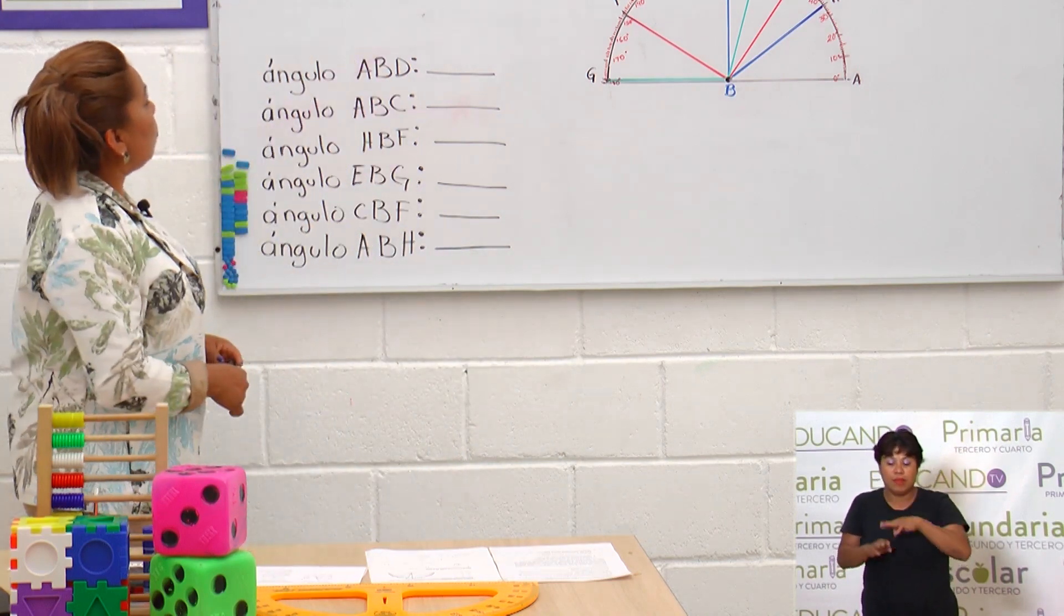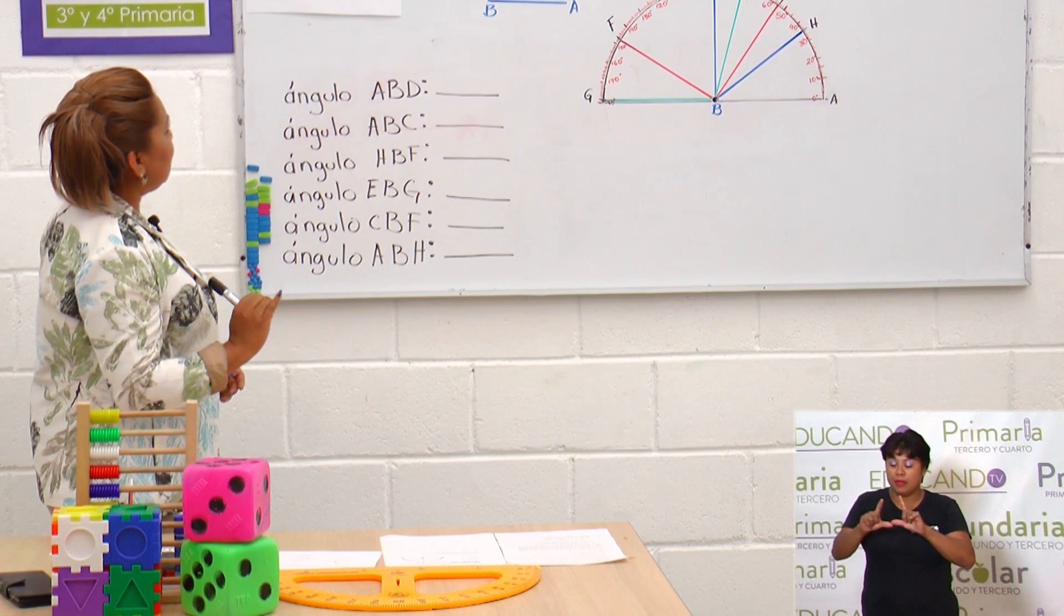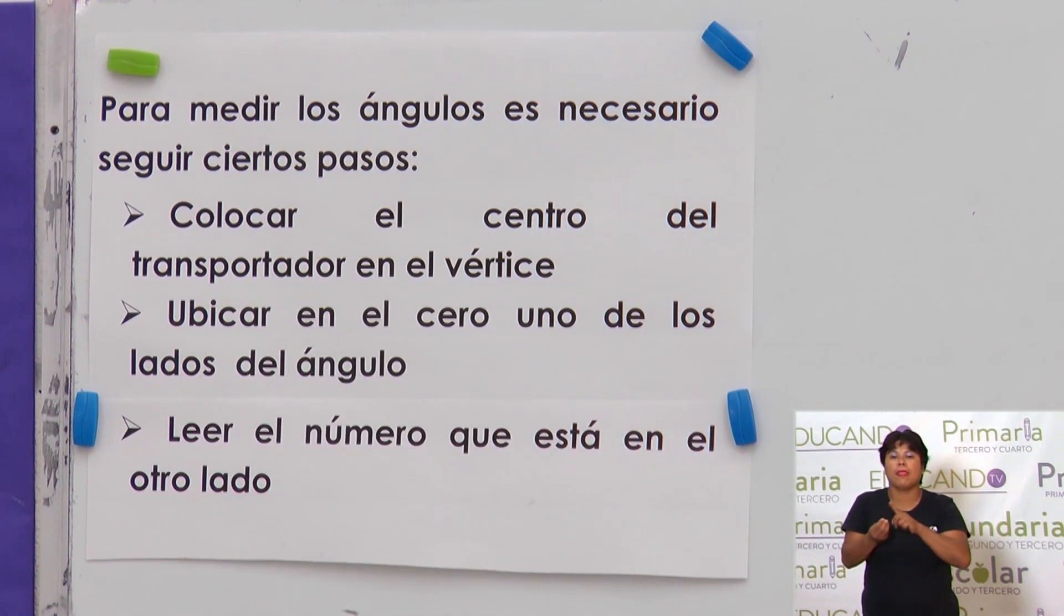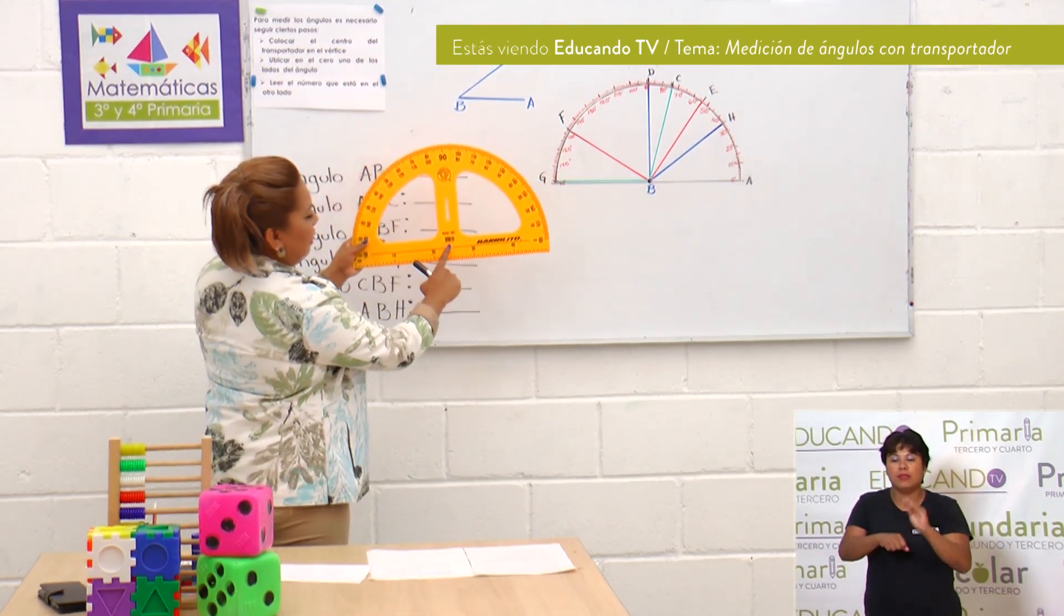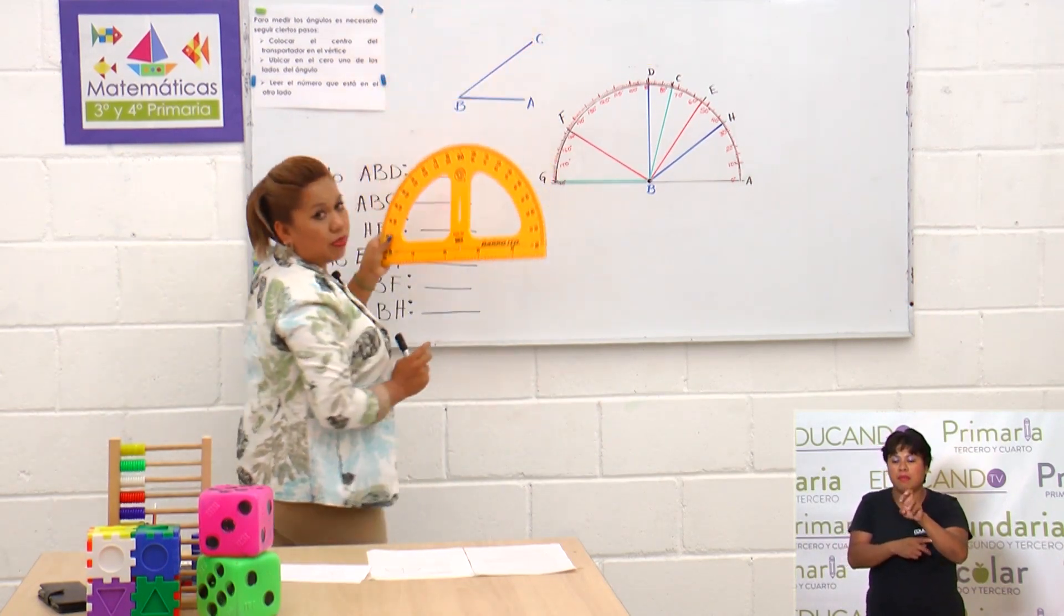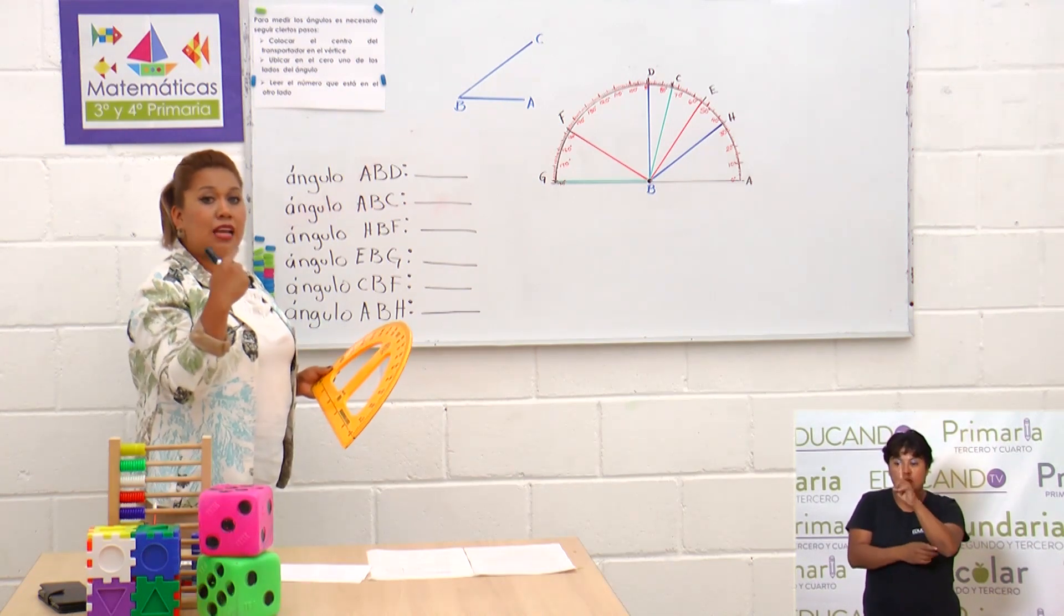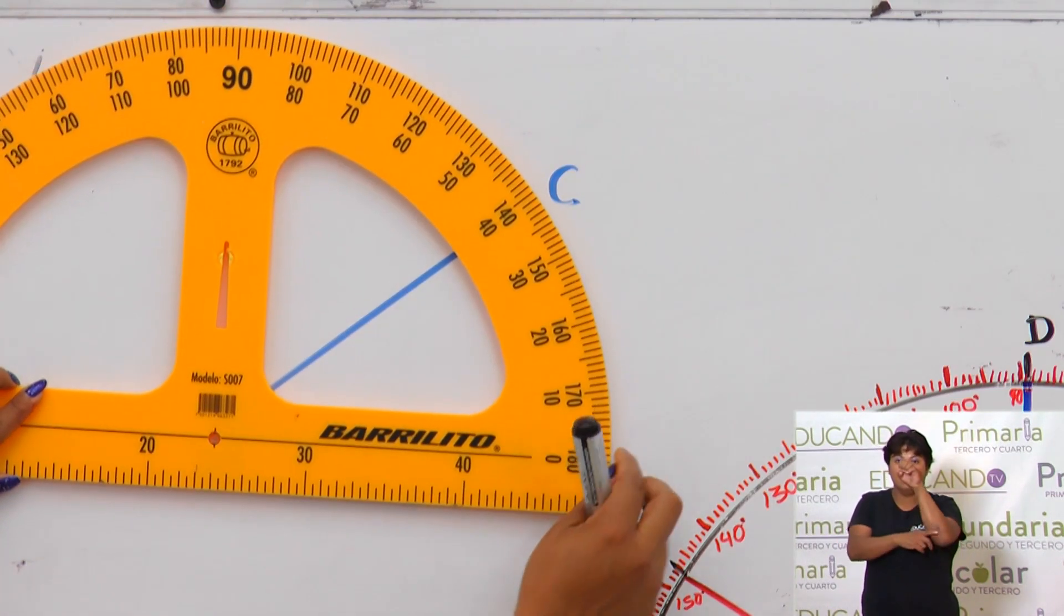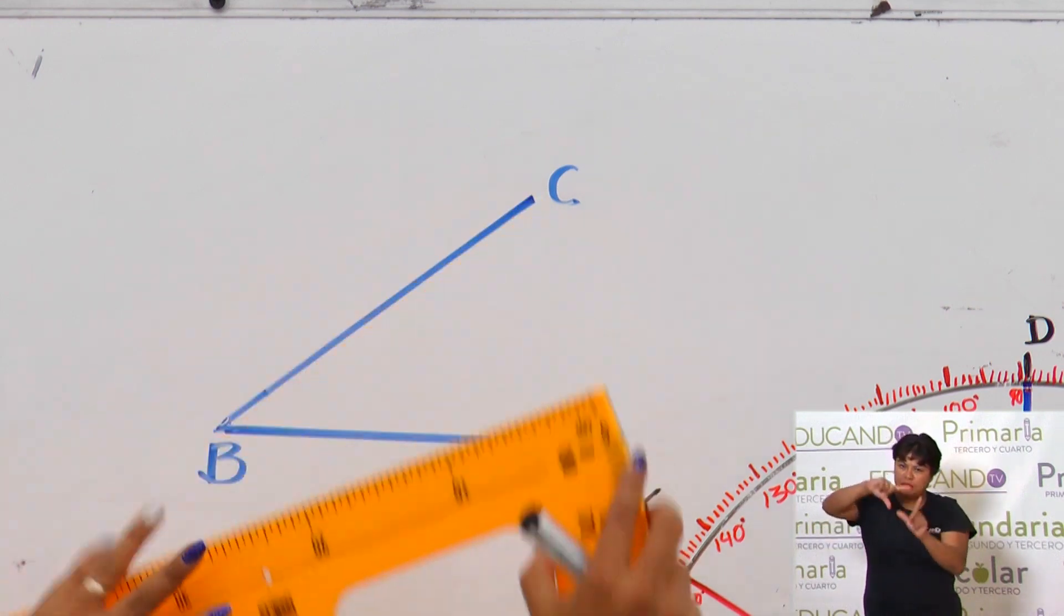Para medir un ángulo es necesario seguir tres pasos muy sencillos. El primer paso nos dice: colocar el centro del transportador en el vértice. Recuerda que un vértice es donde se unen las dos líneas. En este caso, aquí tenemos un ángulo. El vértice sería el punto B. El segundo paso: ubicar en el cero uno de los dos ángulos. Es decir, si este lo estoy tomando como vértice, debo ubicar el cero en uno de los dos ángulos. Puede ser aquí o bien puede que lo voltee y entonces sea en el C.